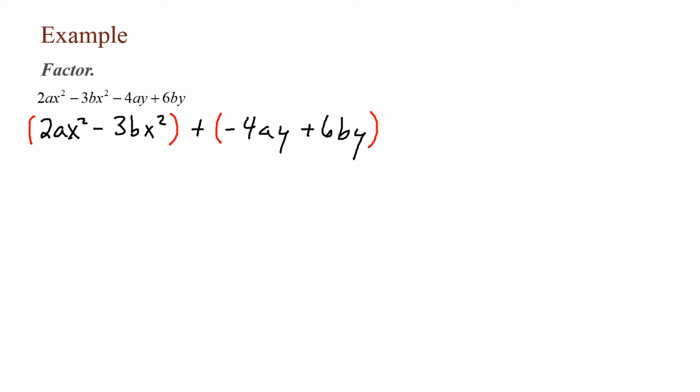Two parentheses beside each other means multiplication, and we are not multiplying these parentheses. Looking at 2ax² minus 3bx²: 2 and 3 have nothing in common, I only have an a in the first term and a b in the second term, but both terms have x², so that's my greatest common factor. Factoring out x², I'm left with (2a minus 3b).